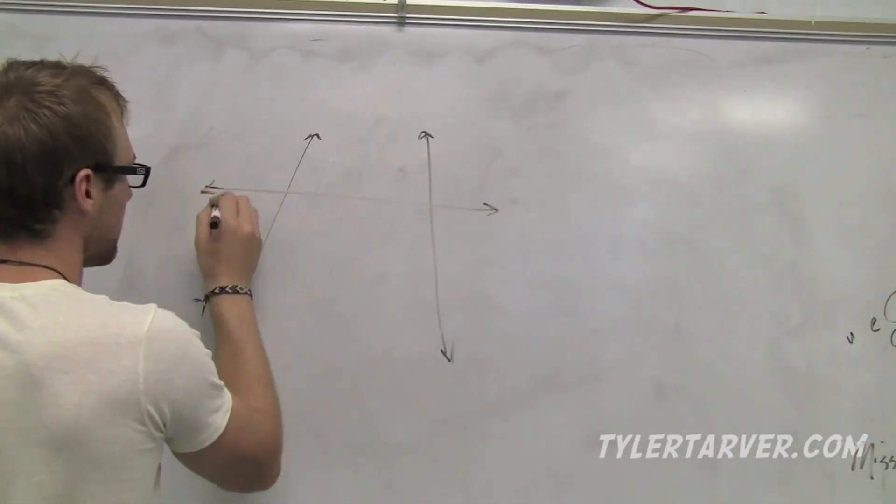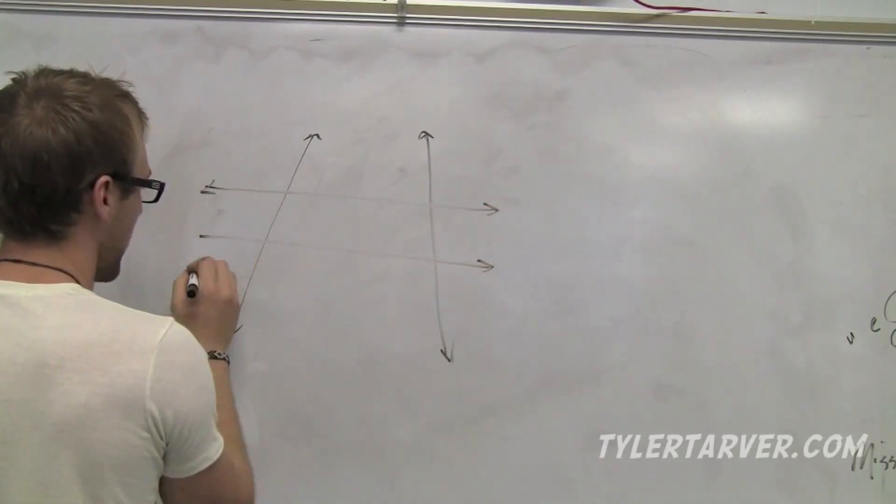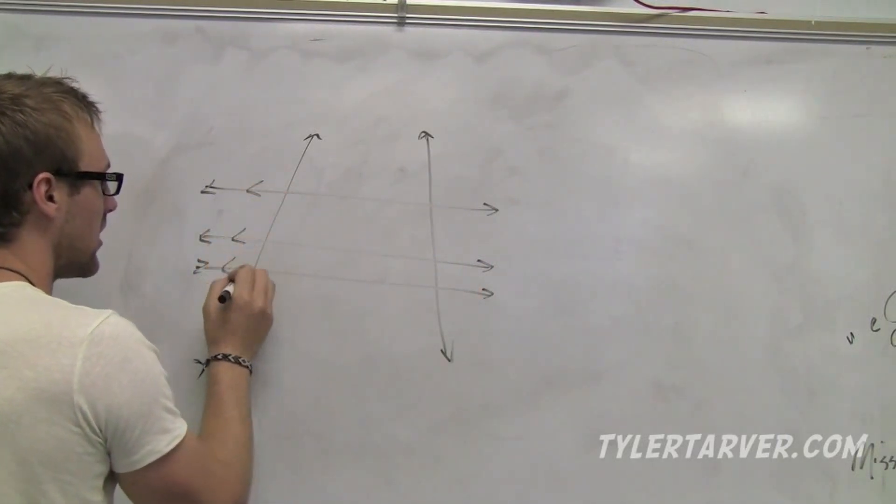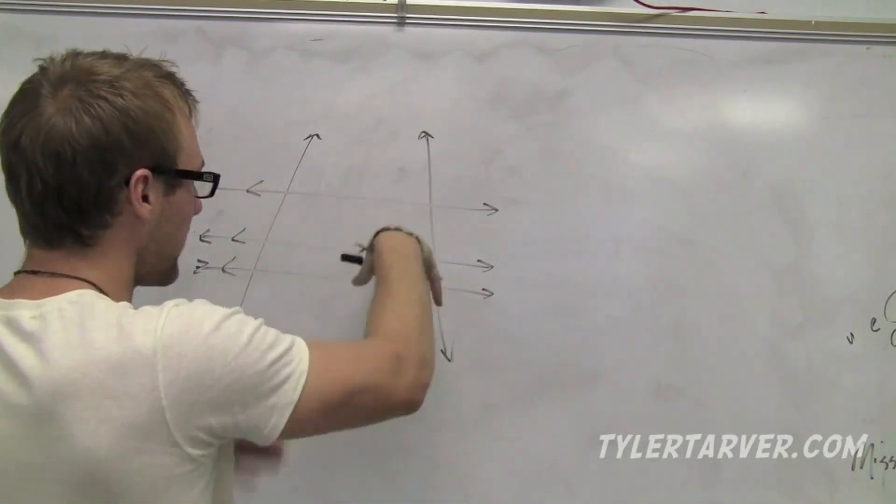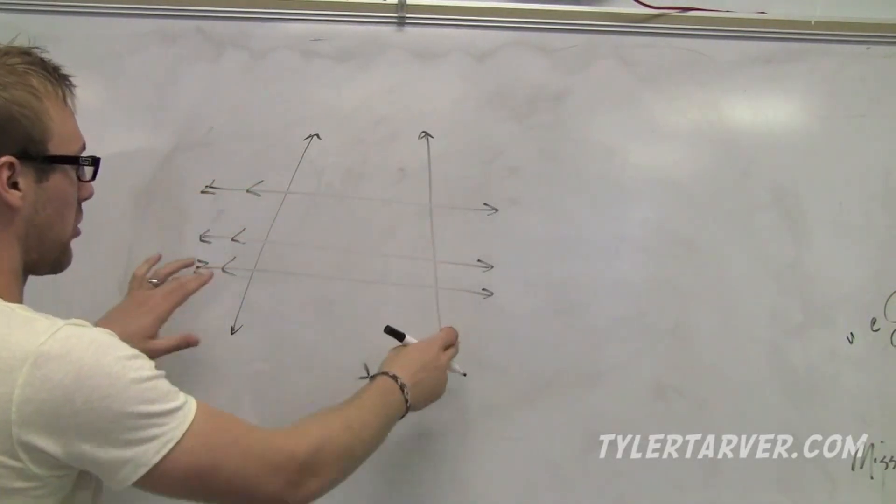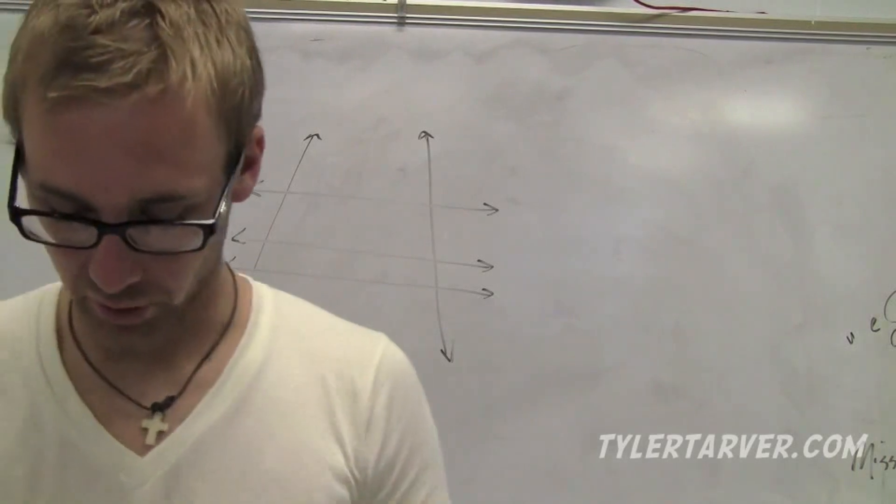If we have lines that cut them that are parallel, say all three of these are parallel, it cuts all three of these into proportional sections. That means all this is proportional. And you can set up a proportion.